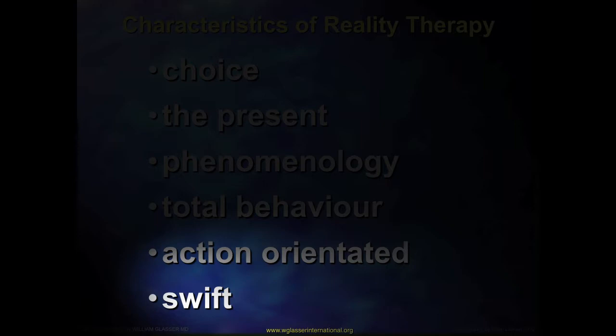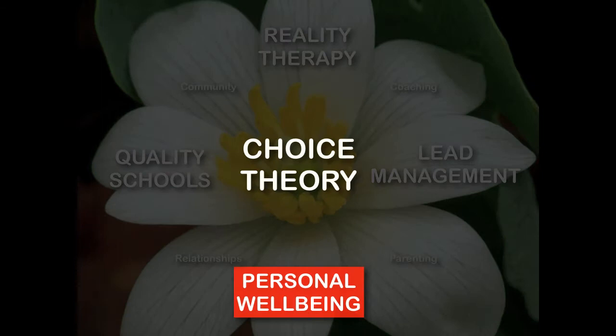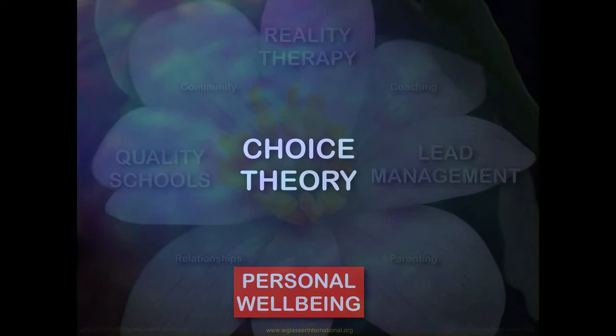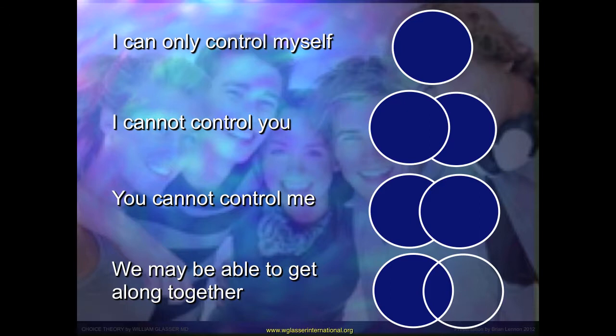The next aspect of Choice Theory Psychology is personal wellbeing, sometimes referred to as mental health, which is becoming increasingly central to Glasser's ideas. Reflecting on the central concepts of Choice Theory: I can only control myself, I cannot control you, you cannot control me — but we may be able to get along together. The world tends to work on the opposite — what Glasser calls the psychology of external control — where you try to control me and I try to control you, leading to bad relationships, a lack of personal wellbeing, and a lot of unhappiness.